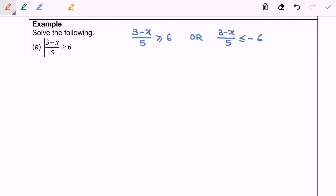Let's focus on the left-hand side. I'm going to multiply both sides by 5, so 3 minus x is greater than or equal to 30. Rearrange the equation and we will have x less than or equal to negative 27.